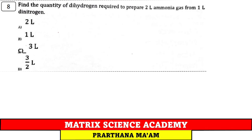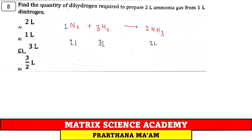Question 8: What quantity of dihydrogen is required to prepare 2 liters of ammonia gas? Reaction: N₂ + 3H₂ → 2NH₃. Volume ratio: 1:3:2. To produce 2 L ammonia, 3 L of hydrogen is required. Option: 3 liters.